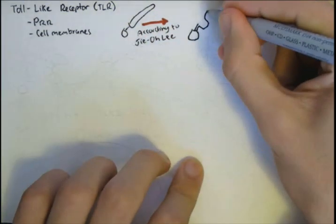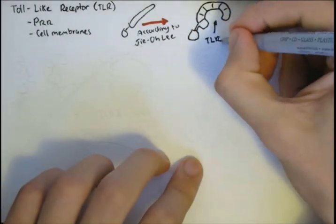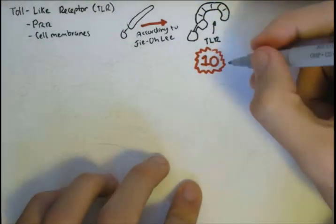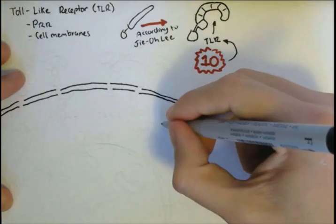I drew the receptor looking like this before, but G.O. Lee's image, published in Janeway's Immunology Edition 8, shows Toll-like receptors looking more like this. There are 10 types of Toll-like receptors in the human body, found in either the outer membrane or endosomal membrane.